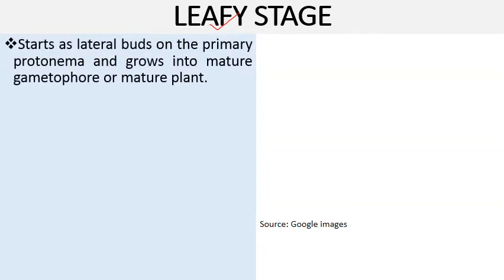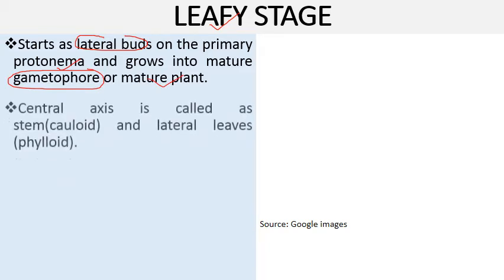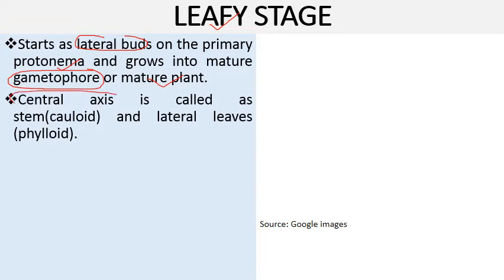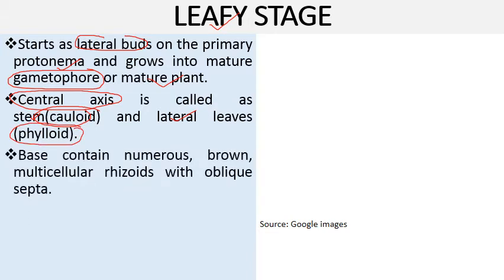The next stage is the leafy stage, also called the gametophore. It starts as lateral buds on the primary protonema and grows into a mature gametophore and mature plant. It consists of a central axis — the stem structure, called cauloid — and has lateral leaves commonly known as phylloid. The base contains numerous brown multicellular rhizoids with oblique septa, as already discussed.